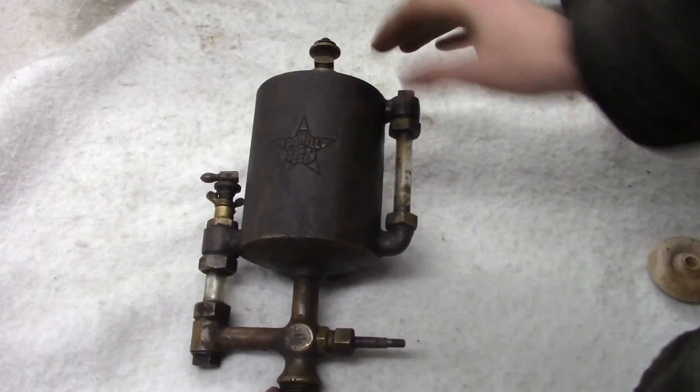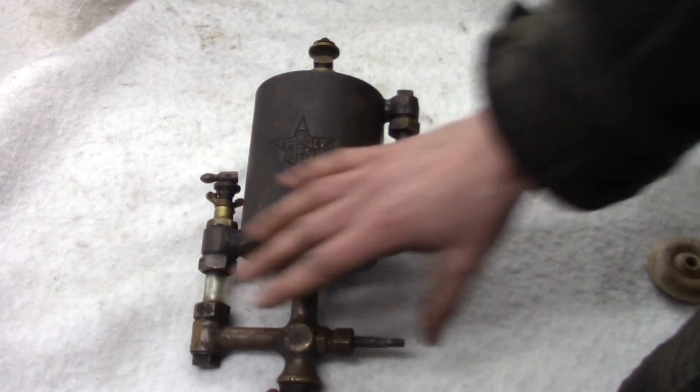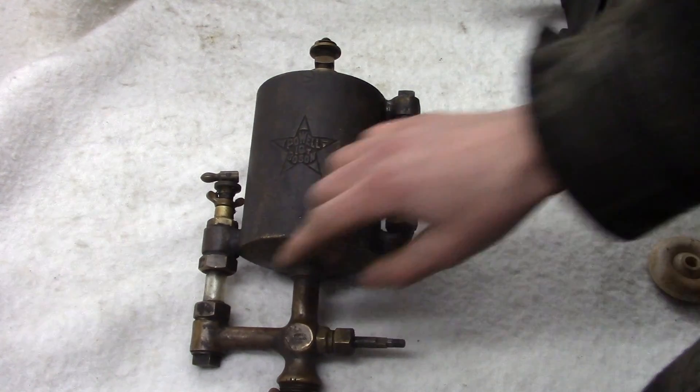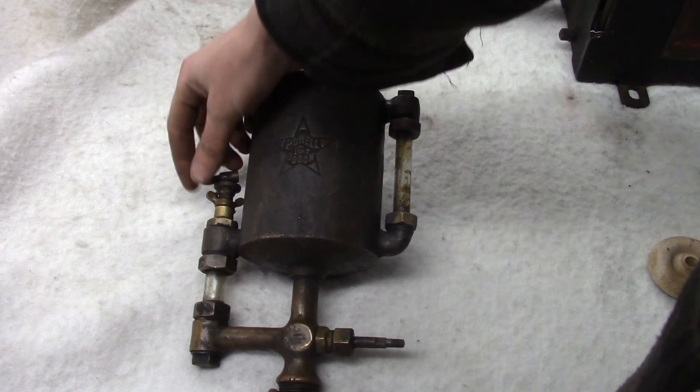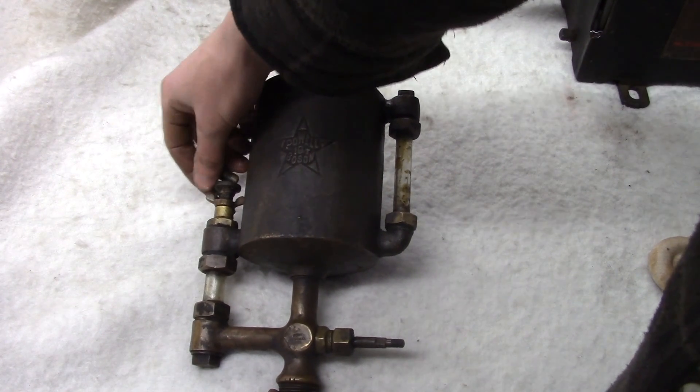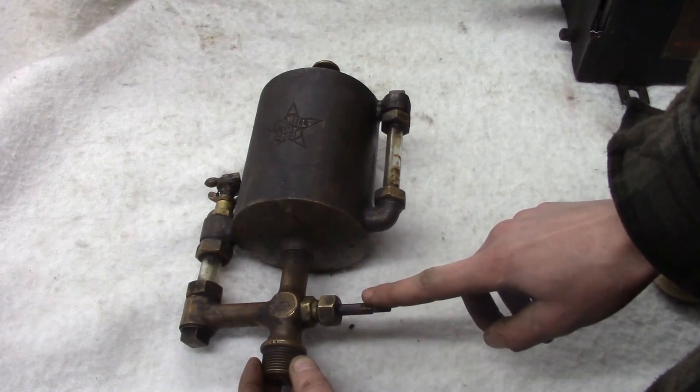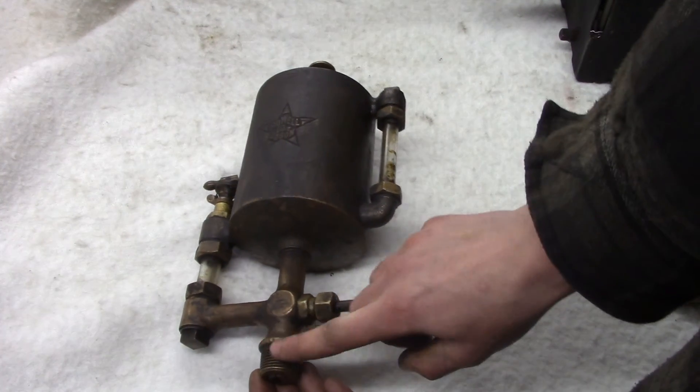You can see the general layout of this. This is the reservoir. There's a sight glass to tell you the oil level. You see this is the same as my other drip oilers. There's a little metering valve, there's a sight glass.